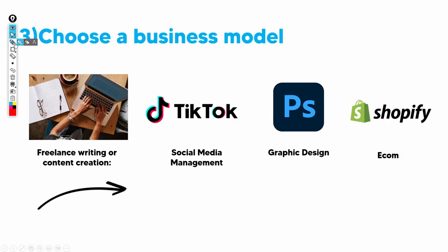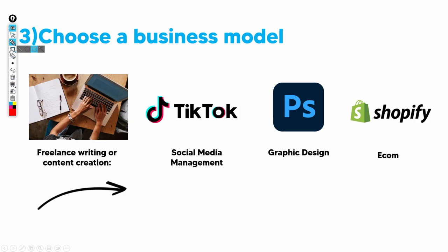What you also need to do is choose a business model — this is going to be the most important part, because depending on the business model you choose will depend on the kind of work you do. For example, if you're going to be doing freelancing or content creation, you need to figure out whether there's going to be blogs, whether there's going to be courses, whether there's going to be videos. There are many different ways to fulfill freelance writing or content creation.